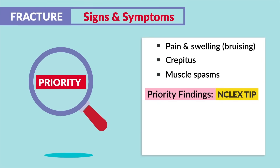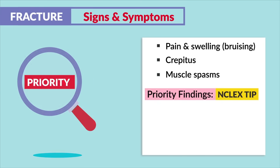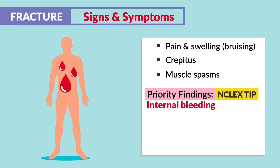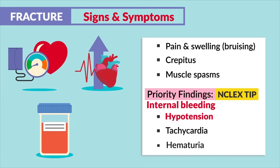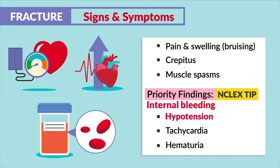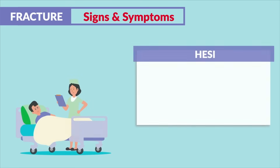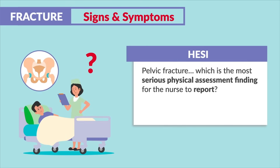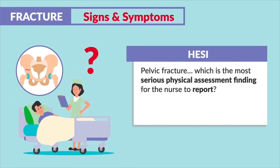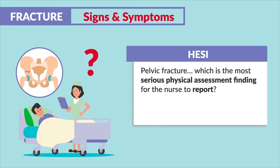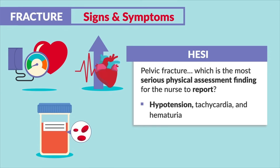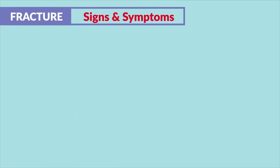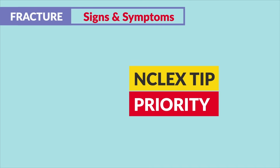A priority finding and a big NCLEX tip here is internal bleeding — so hypotension, tachycardia, and even hematuria, that blood inside the urine. Hessy mentions a pelvic fracture: the most serious physical assessment finding for the nurse to report is hypotension, tachycardia, and hematuria.